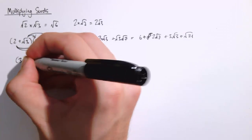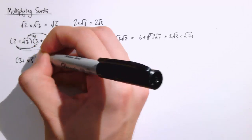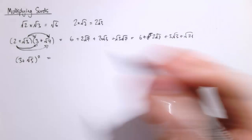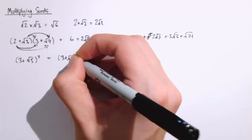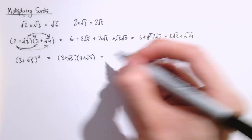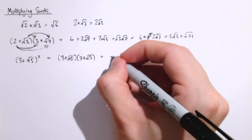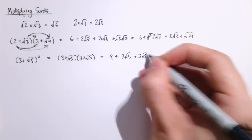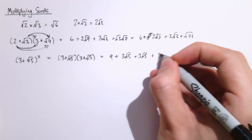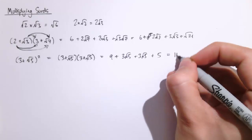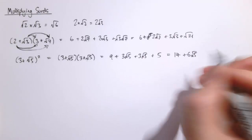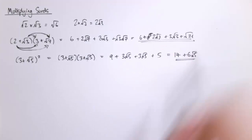Another example: we could do 3 plus the square root of 5 squared. Remember that this means the whole bracket squared, so we can't just do 3 squared plus root 5 squared — we have to do 3 plus root 5 times 3 plus root 5. Going through the multiplication: 3 times 3 is 9, then plus 3 root 5, plus another 3 root 5, and finally root 5 times root 5 which is 5. So this becomes 14 plus 6 root 5, combining the 9 and 5 and the two lots of 3 root 5.